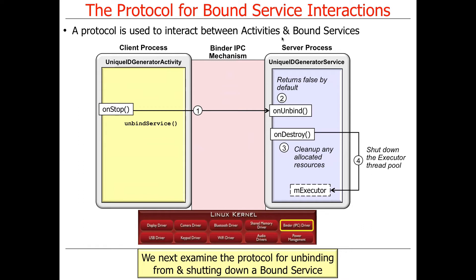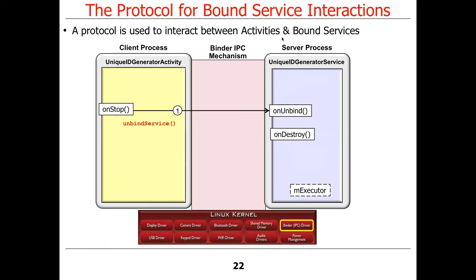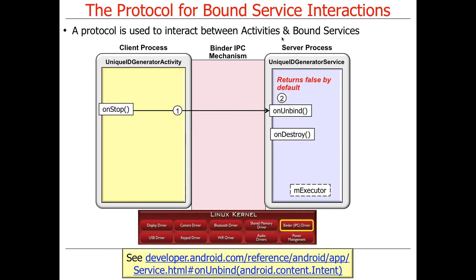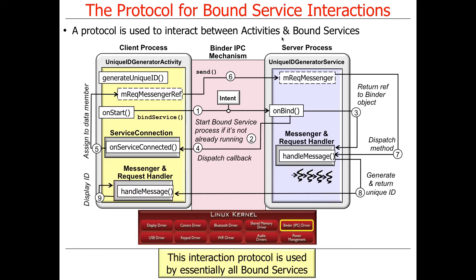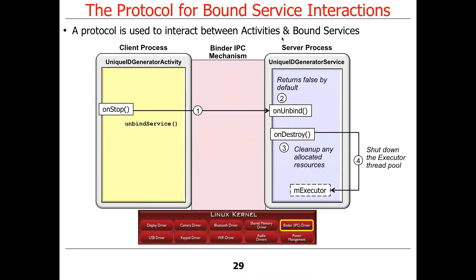Here is the protocol for shutting things down. The client calls unbindService, or onStop is called, which causes unbindService to be called, which causes onUnbind to be called, returning false by default. If this is the last activity bound to the service, Android shuts the service down. One of the steps in shutting down is calling the service's onDestroy lifecycle hook, which cleans up resources like the executor that's running.